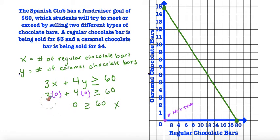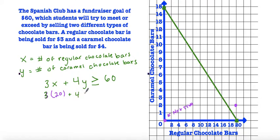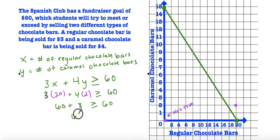We're going to pick another point just to make sure. We could pick the point (20, 2), where the x value is 20 and the y value is 2. So 3 times 20 plus 4 times 2 is greater than or equal to 60. Three times 20 is 60, 4 times 2 is 8, and 60 plus 8 is 68, which is greater than or equal to 60 — it's actually greater than, so this coordinate is true.